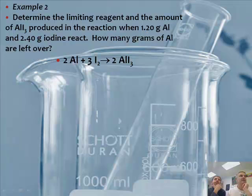Determine the limiting reactant in the amount of aluminum iodide produced in the reaction when 1.2 grams of aluminum and... All right, you can read. There's two masses of two different substances. Does that mean it's a limiting reactant problem? I think so.